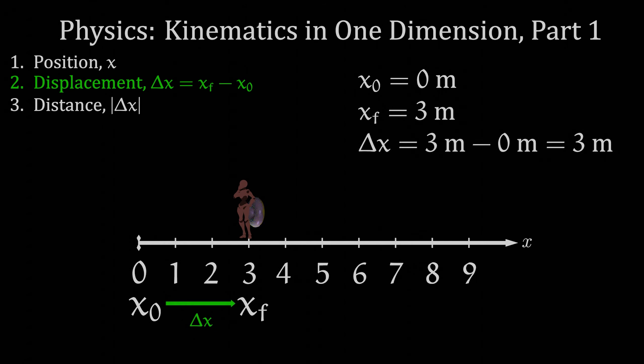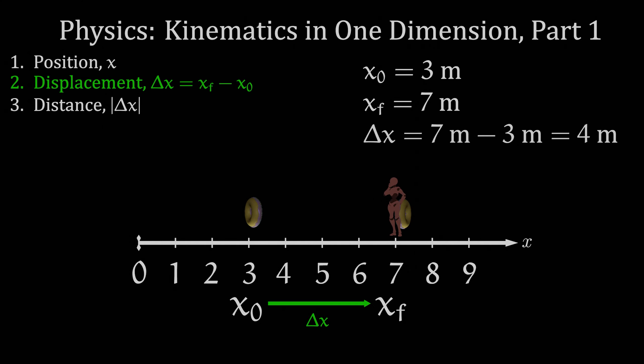Now, if there is yet another donut a bit farther down the number line, and I walk to that one from the first donut? In this case, my initial position is at the first donut, or x0 is equal to three meters, and my final position is at the second donut, which is x sub f is equal to seven meters. My displacement, then, from the first donut traveling to the second donut is seven meters minus three meters, which is equal to four meters.